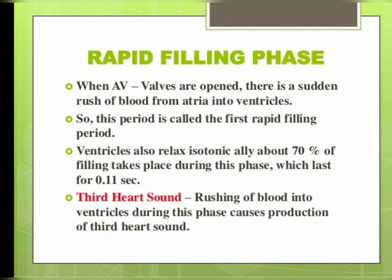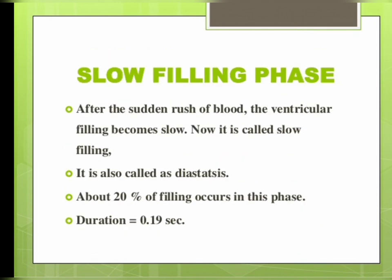The next is the slow filling phase. After the sudden rush of blood the ventricle filling becomes slow. This phase is also called diastasis. About 20 percent of filling occurs in this phase and the duration of the slow filling phase is 0.19 second.